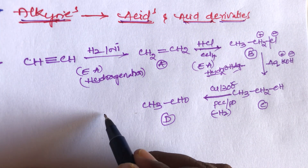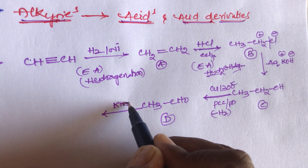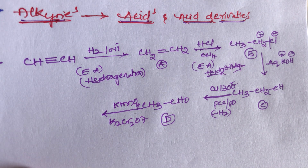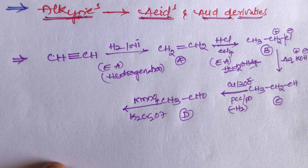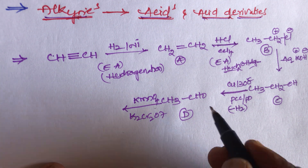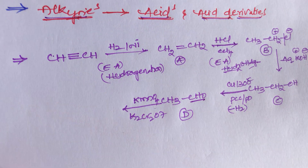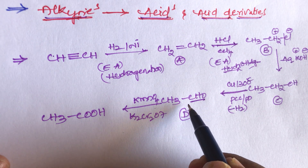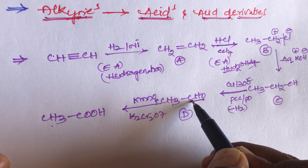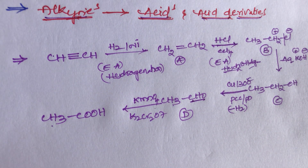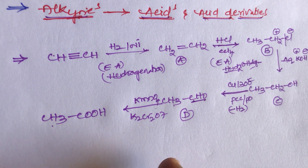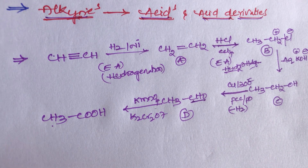This aldehyde again undergoes oxidation with KMnO₄ or K₂Cr₂O₇ — potassium permanganate or potassium dichromate. These two reagents are strong oxidizers. They can oxidize the aldehyde group, converting it into acid. We get product CH₃COOH. In acidic medium or neutral medium, this aldehyde group is converted into acid in the presence of KMnO₄ or K₂Cr₂O₇, both strong oxidizers.